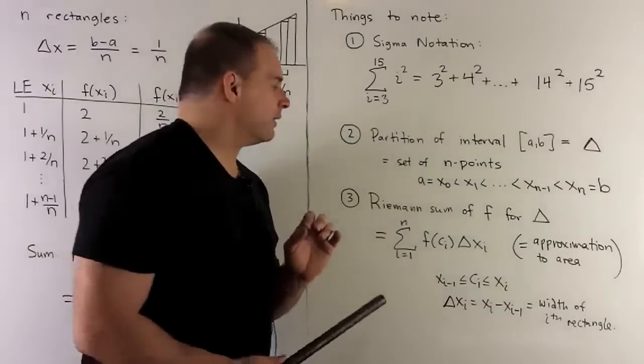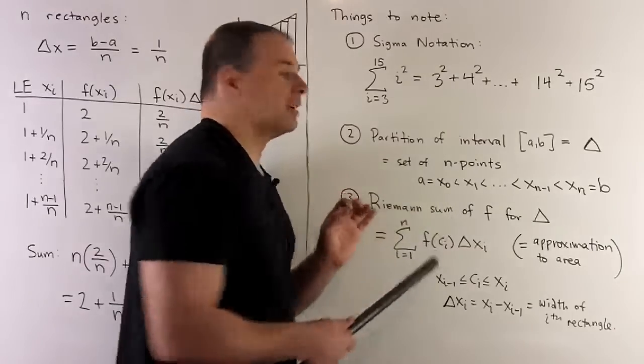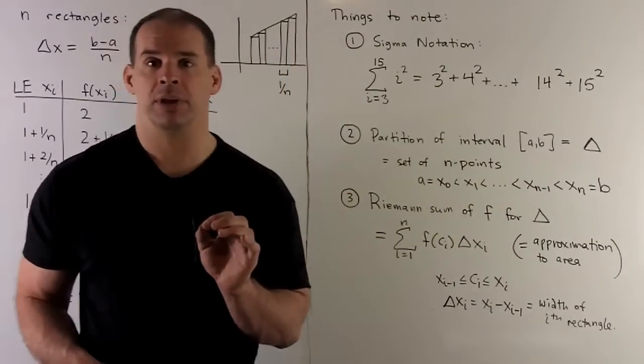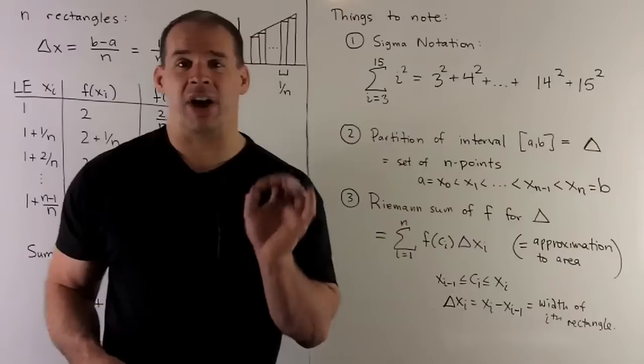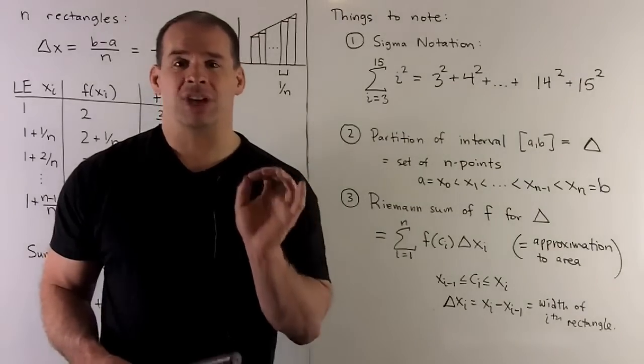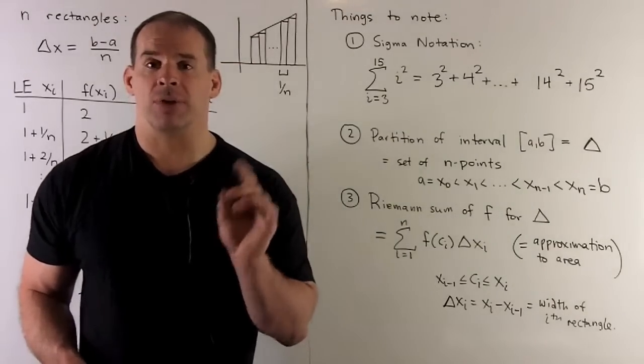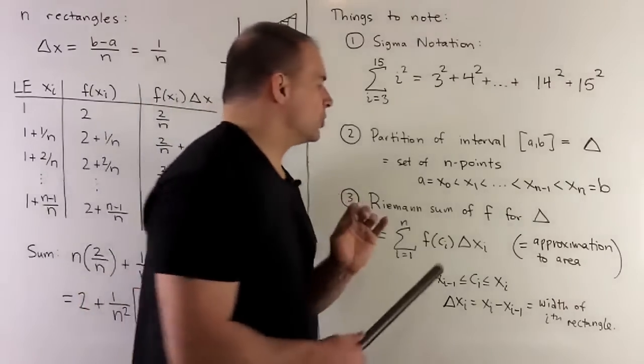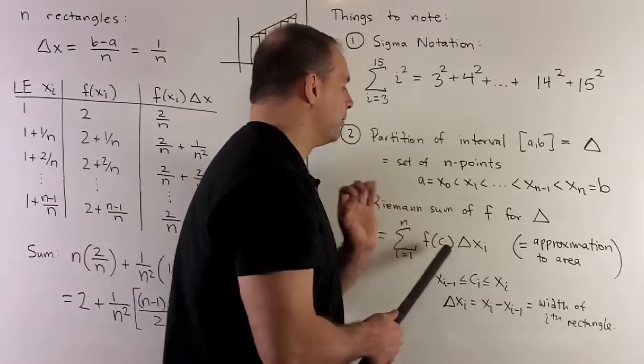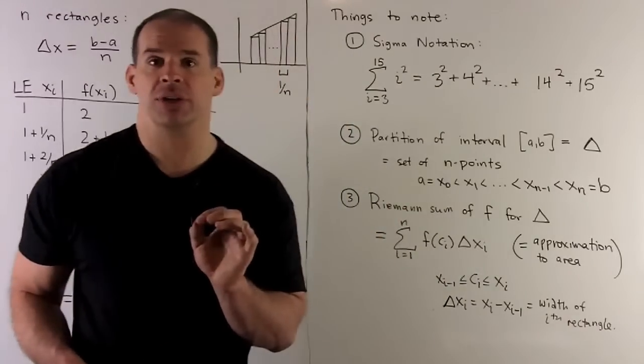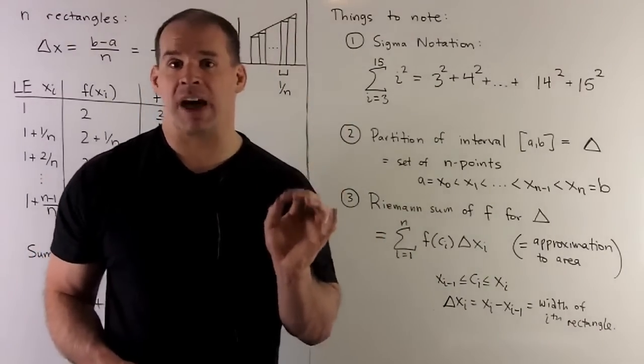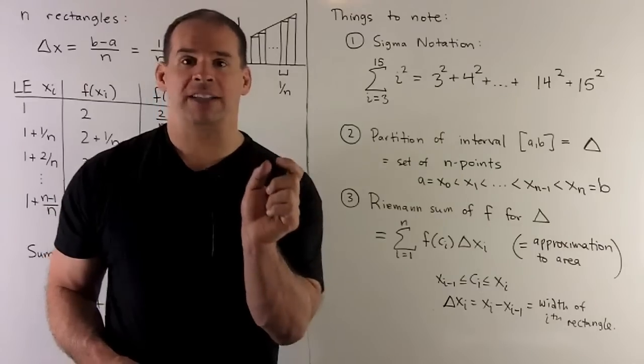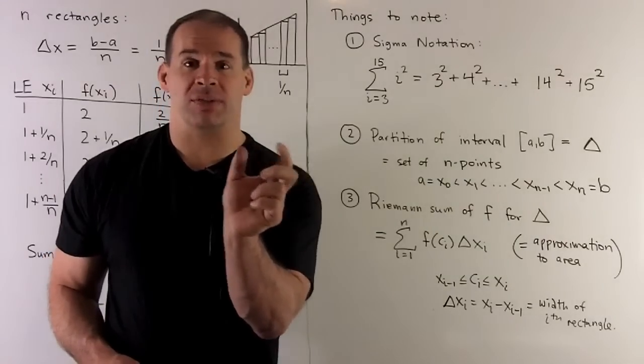So that leads us to the idea of a Riemann sum of a function for a given partition. We want to take the process that we had before, approximating an area using rectangles, and then generalize as much as we can. So, the first generalization, we can use any old partition to get the bases of our rectangles. So, if our partition isn't evenly spaced, that's just fine. That just means the rectangles will have bases of unequal length.